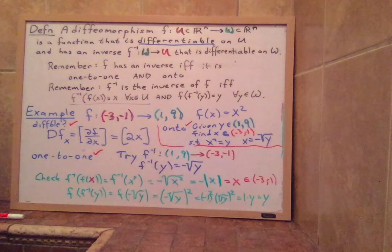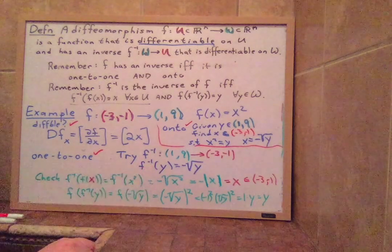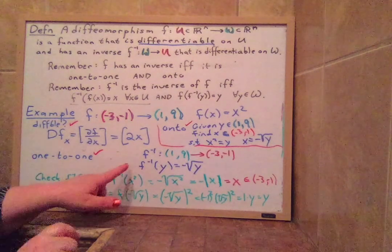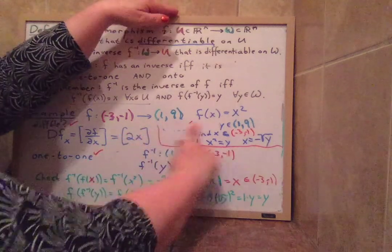Okay? So everything is fine. And we do, in fact, have that our F inverse is this. So we don't have to try it. We can say F inverse is negative square root of y. Right? So since we have that, I'm going to write that up here.